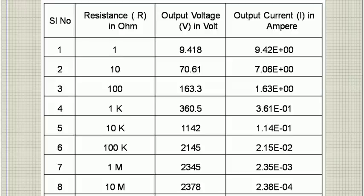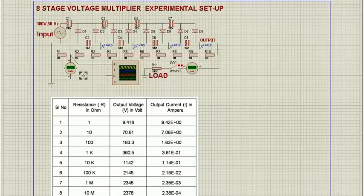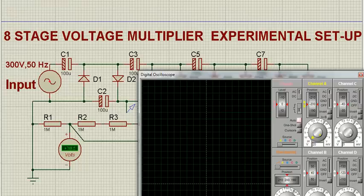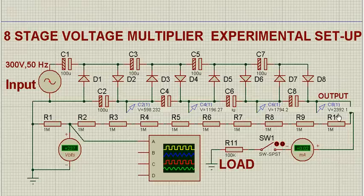This is the arrangement that we have at the moment. Now we'll go back to our original circuit where we have the eight-stage multiplication. This is the circuit now. Once we simulate this, there is an oscilloscope we will see later. Now if I pause it, you'll find this voltage is around 2.392 kilovolts without load.